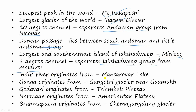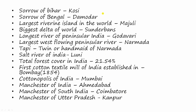The Indus River originates from Mansarovar Lake. The Ganga River originates from Gangotri Glacier near Gaumukh. The Godavari originates from the Triambak Plateau. Narmada originates from Amarkantak Plateau, and Brahmaputra originates from the Chemayungdung Glacier. The sorrow of Bihar is river Kosi, and the sorrow of Bengal is the Damodar River.